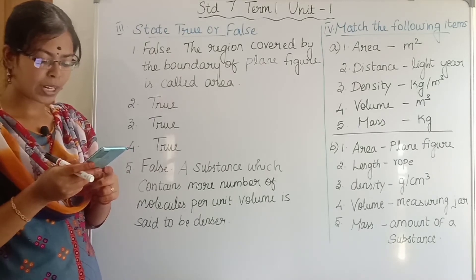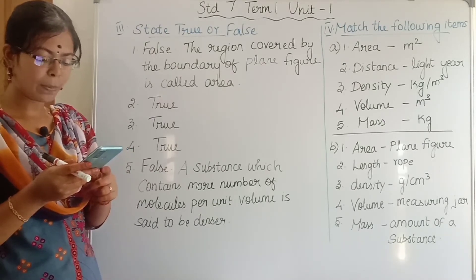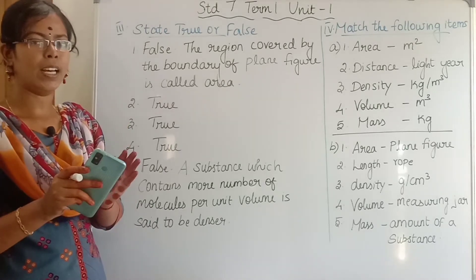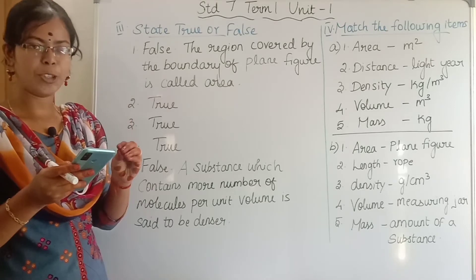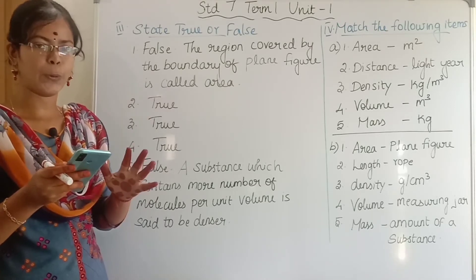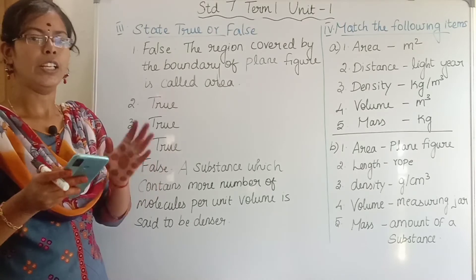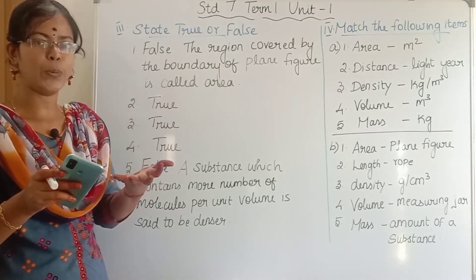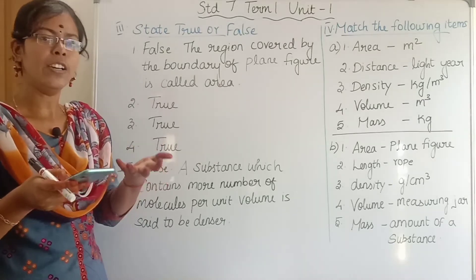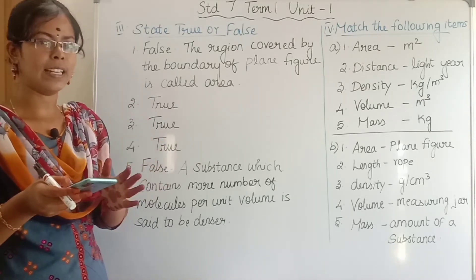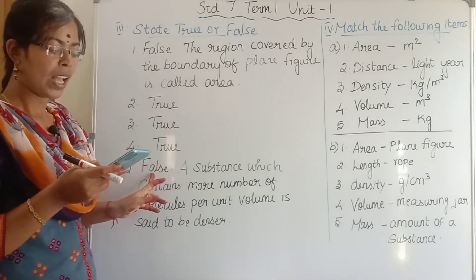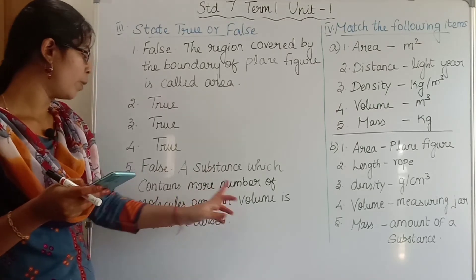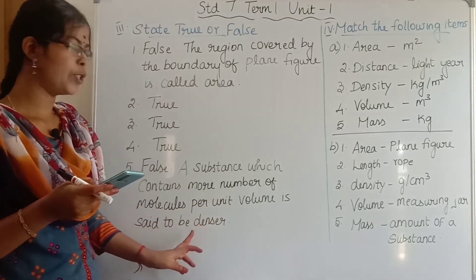Fifth question: a substance which contains less number of molecules per unit volume is said to be denser. If the volume is the same but fewer molecules are present, that means less mass. This is a false statement. The correct statement is: a substance which contains more number of molecules per unit volume is said to be denser.